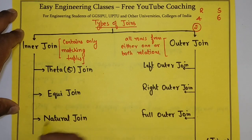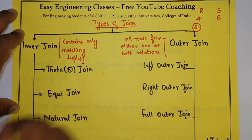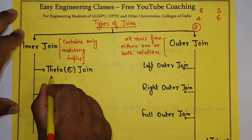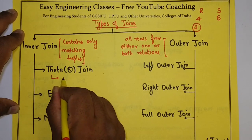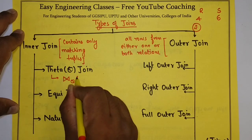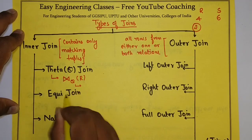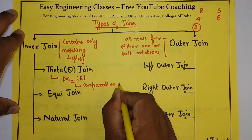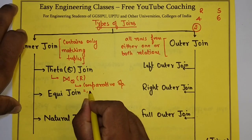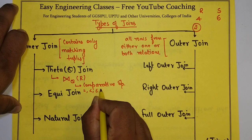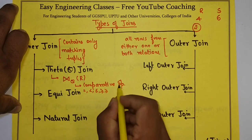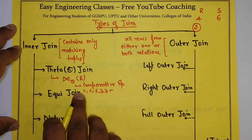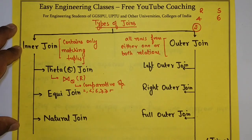Inner join can be divided into three different types: theta join, equi join, and natural join. Theta join is defined as a join which uses comparative operators like equal to, greater than, greater than or equal to, less than, less than or equal to, or not equal to. So theta join is a simple join which contains any one of these comparative operators.